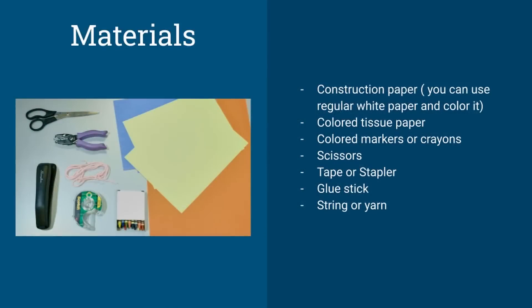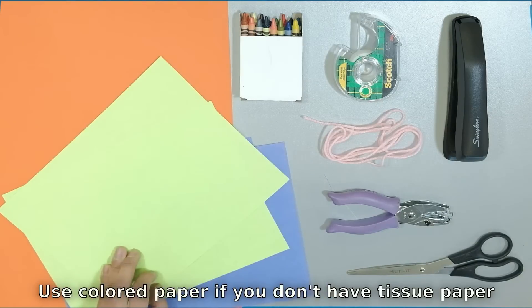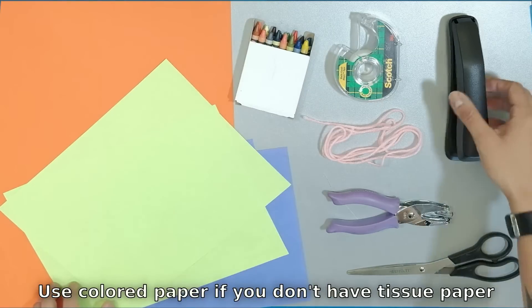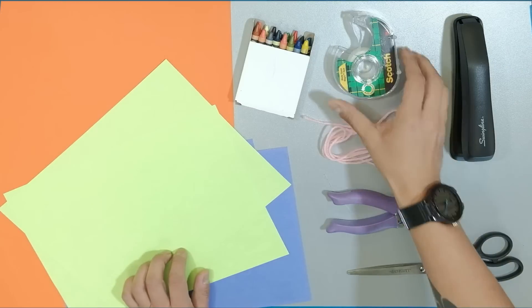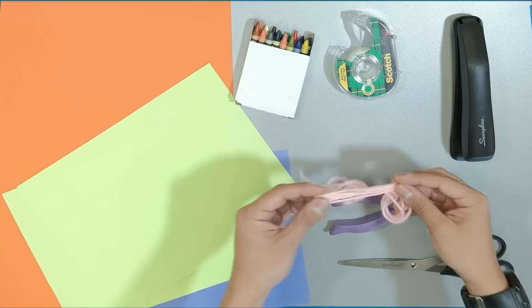Now we're ready to begin our project. What you're going to need is construction paper, colored tissue paper, colored markers or crayons, scissors, tape or a stapler, glue stick, and a string or yarn.